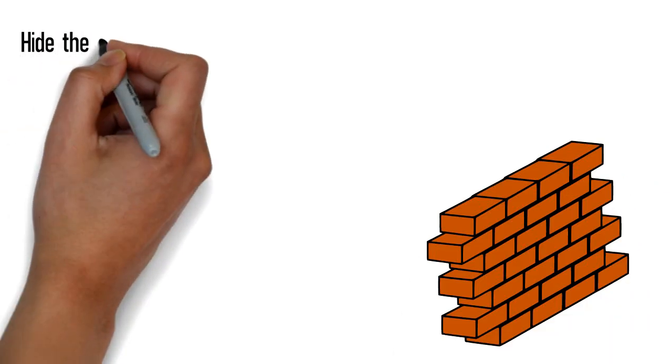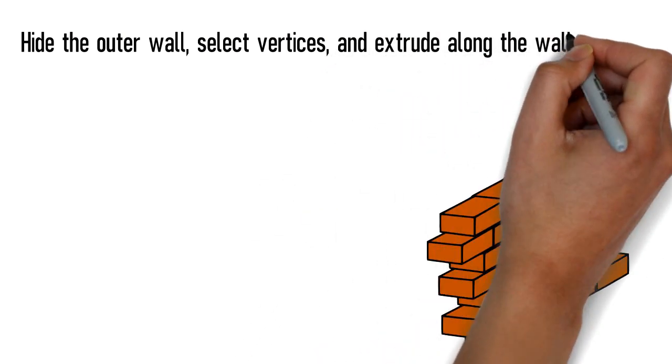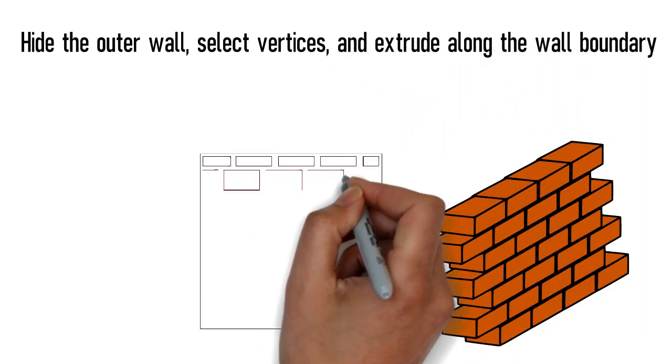Now, hide the outer wall, select vertices, and extrude along the wall boundary. Here, make sure the face is the outer face of the wall,